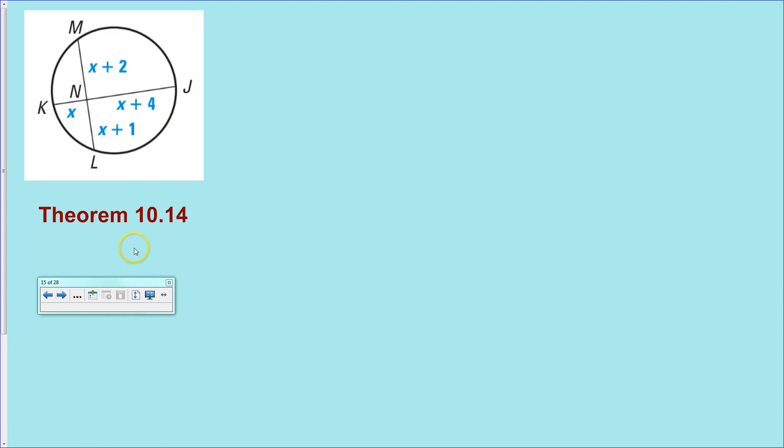The next example here, I have a pair of chords intersecting inside the circle, and we are talking about theorem 10.14. Remember, 10.14 is the only one that talks about each individual segment. So, just walk along the lines and multiply everything together. x plus 2 times x plus 1. Set that equal to x times x plus 4.